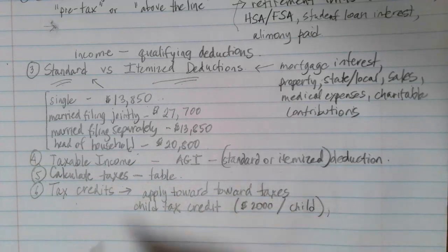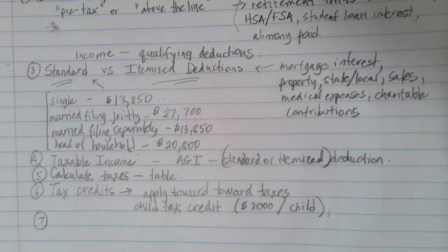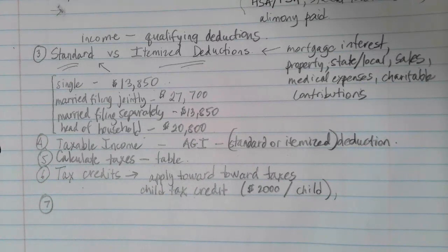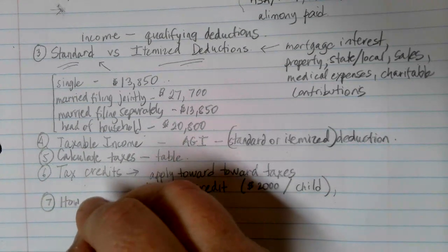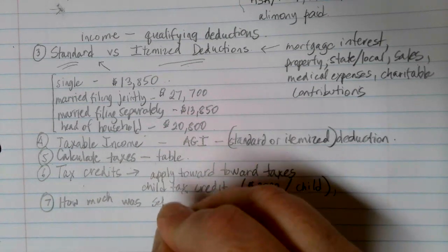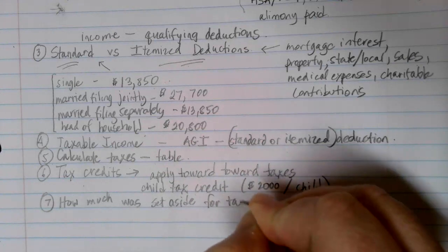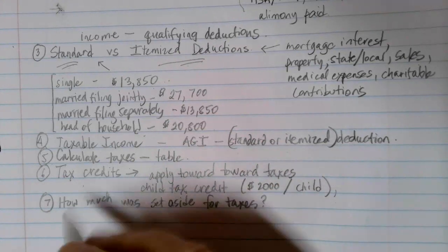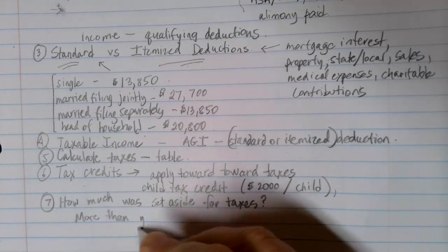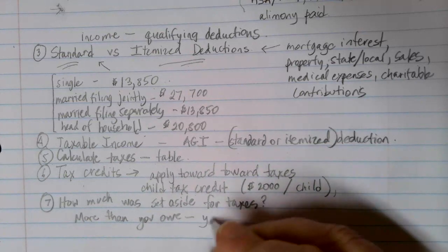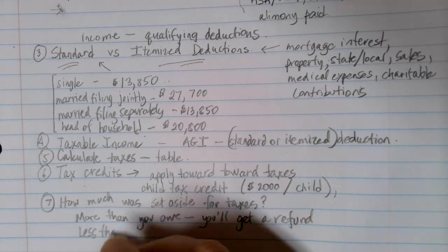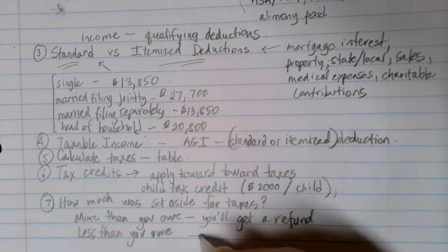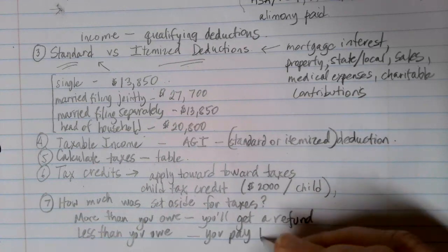Once you've applied your tax credits to your tax, you need to come up with the rest of that money. The government doesn't want you to be in a position where you can't pay them, so businesses are required to set aside money for their workers and employees to pay their taxes when tax time comes due. The last question you need to ask yourself is: how much was set aside for taxes by your employer? If that is more than you owe, you'll get a refund. But if it's less than you owe, you need to pay the balance when you file your taxes.